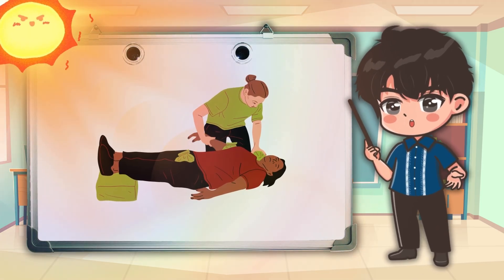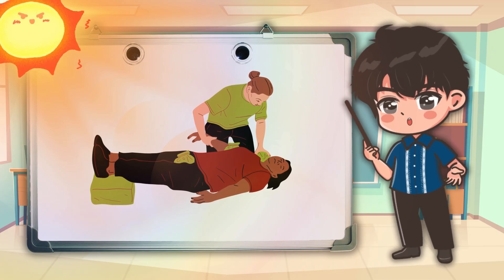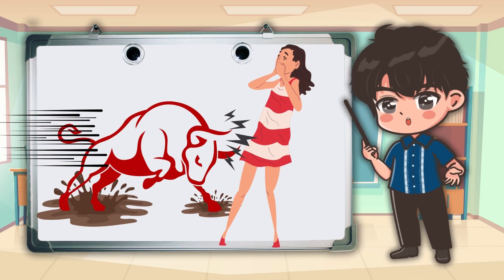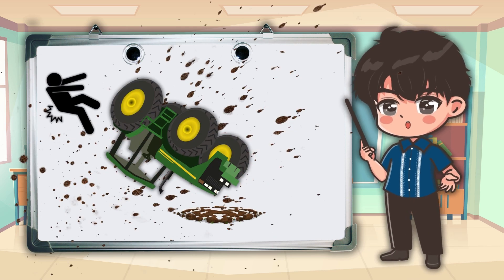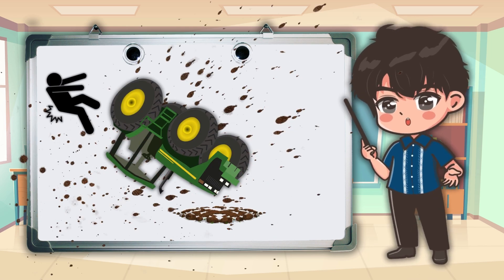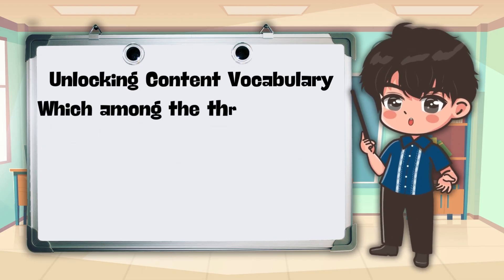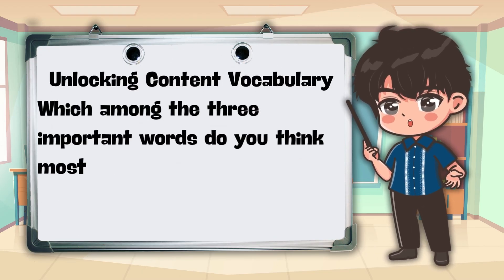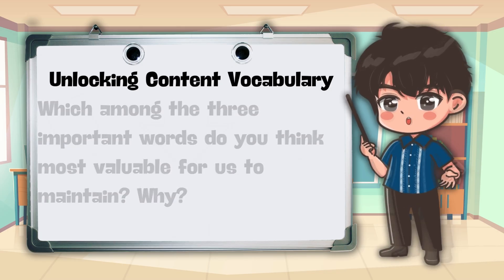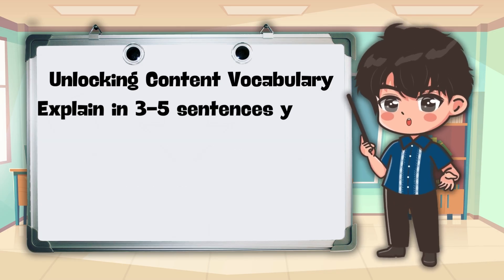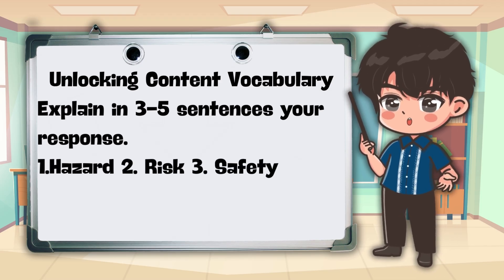From the following pictures, what can you say about this? For unlocking content vocabulary, which among the three important words do you think is most valuable for us to maintain? Why? Explain in three to five sentences your response. The three words are: 1. Hazard, 2. Risk, 3. Safety.